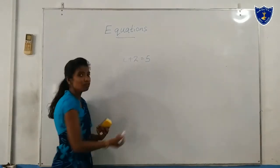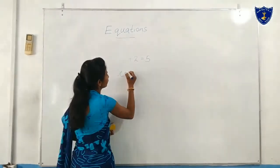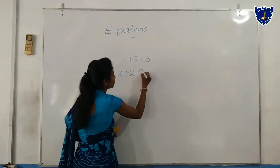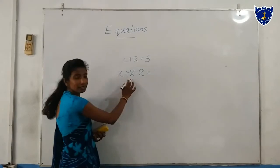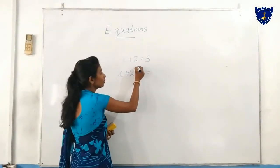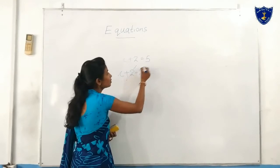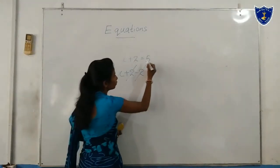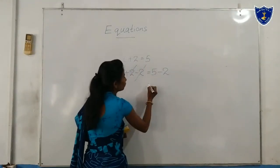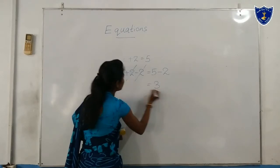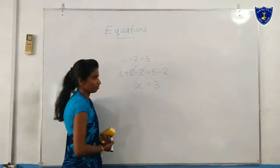How do we remove this one? Here, we subtract 2 — cancel out the 2. Then for the right side, minus 2: in our series that gives 3. Here we can see x, so x equals 3.